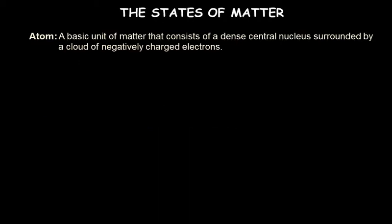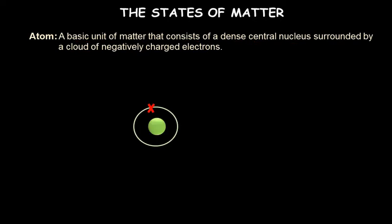Before we start with the three states of matter, let's understand some basic terms like atom. An atom is a basic unit of matter that consists of a dense central nucleus surrounded by a cloud of negatively charged electrons. Here is a model of the atom — I've taken the most common and smallest atom of hydrogen, showing a nucleus and a shell with just one electron. The nucleus has protons, which are positively charged, and neutrons, which have no charge.